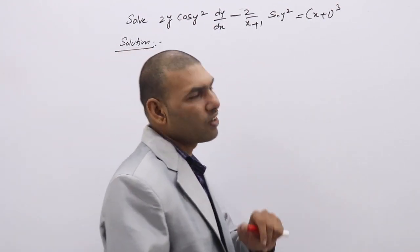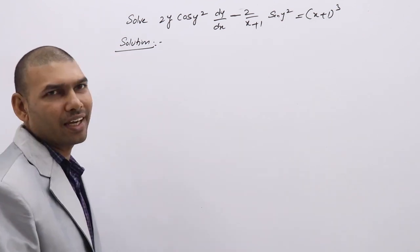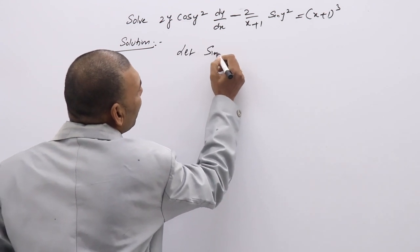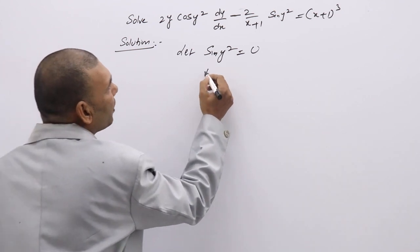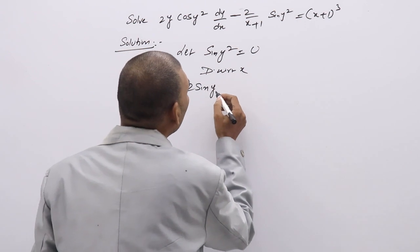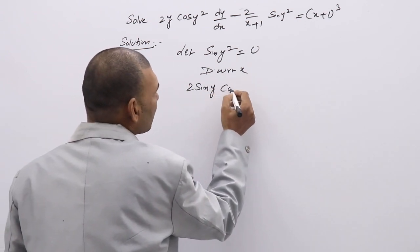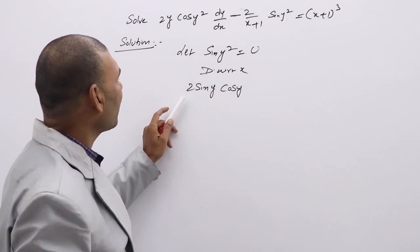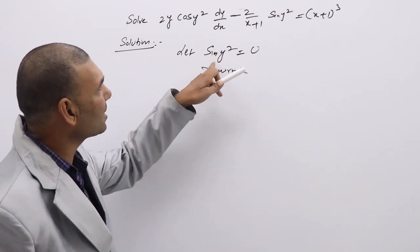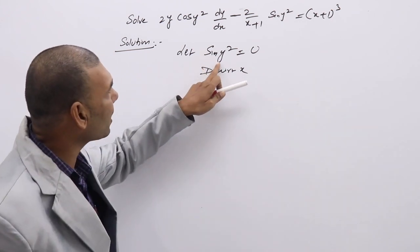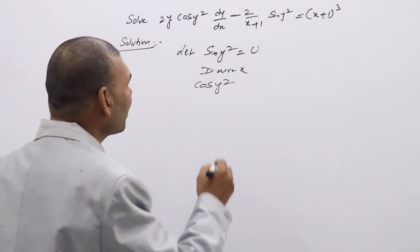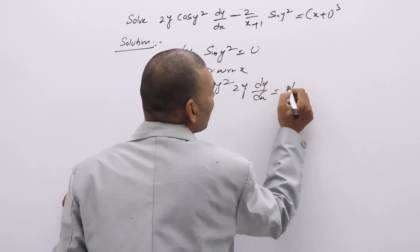Second problem: Solve (2/cos y²)(dy/dx) = −(2/(x+1))·sin y² + (x+1)². This DE can be reduced to linear by substitution. If you assume sin y² = u and differentiate with respect to x, you get: differentiation of sin y² gives cos y² · 2y · (dy/dx) = du/dx. That is: (2/cos y²)·(dy/dx) = du/dx.